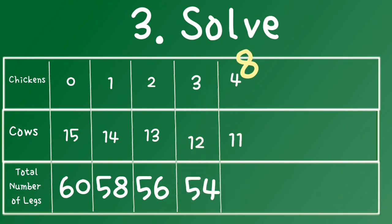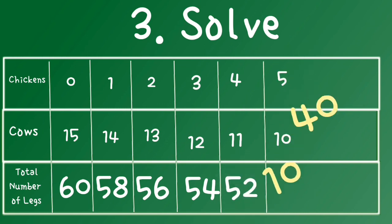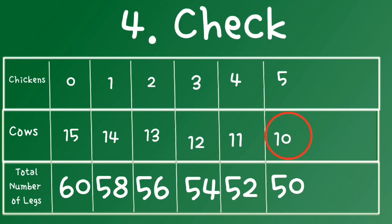And trying, and trying, and trying, until I reach 50 legs, then I will get the correct answer: 10 cows. Finally, check. Review if your answer makes sense. State your answer: There are 10 cows in Alisa's farm.